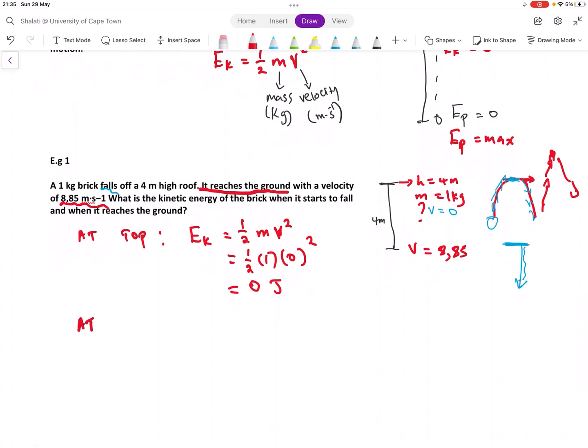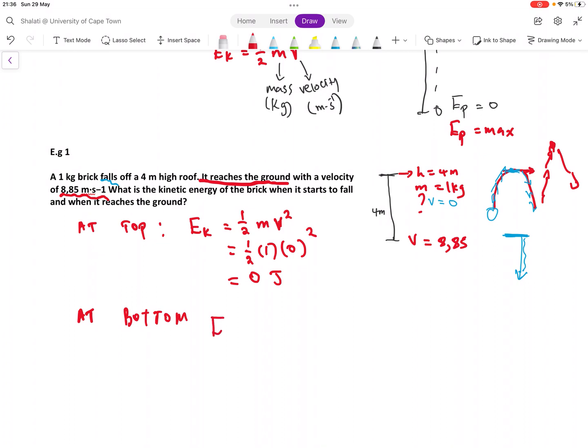Now let's look at the bottom. So at the bottom, it's falling with a velocity of 8.85. So we can use that 8.85. It's falling. It's going to hit the ground with that velocity. So it means at the bottom, we are using 8.85 meters per second. So EK at the bottom is going to be half M, which is 1, V, which is 8.85 squared. So when you put this in your calculator, don't forget to square it because you might get a wrong answer if you're just in a rush. So you don't forget to square that.